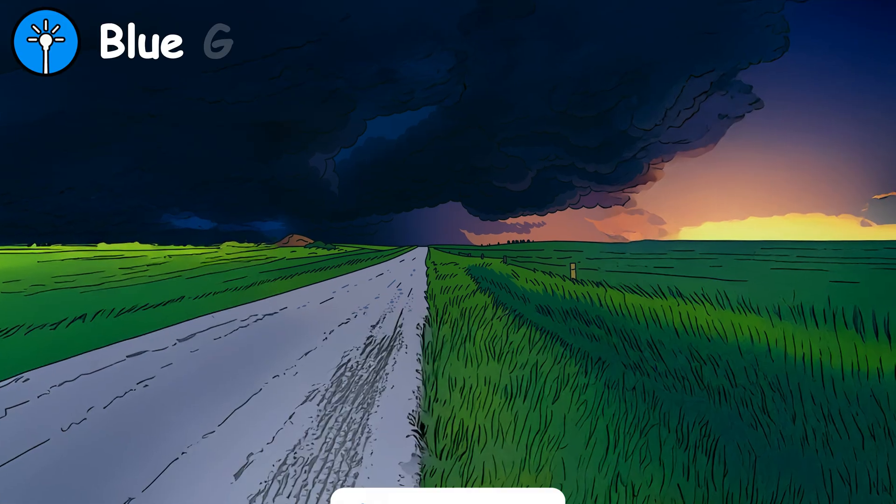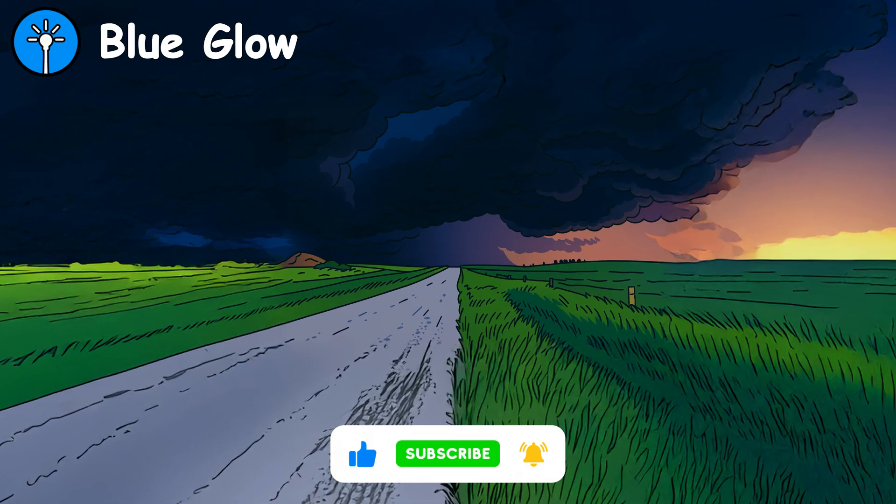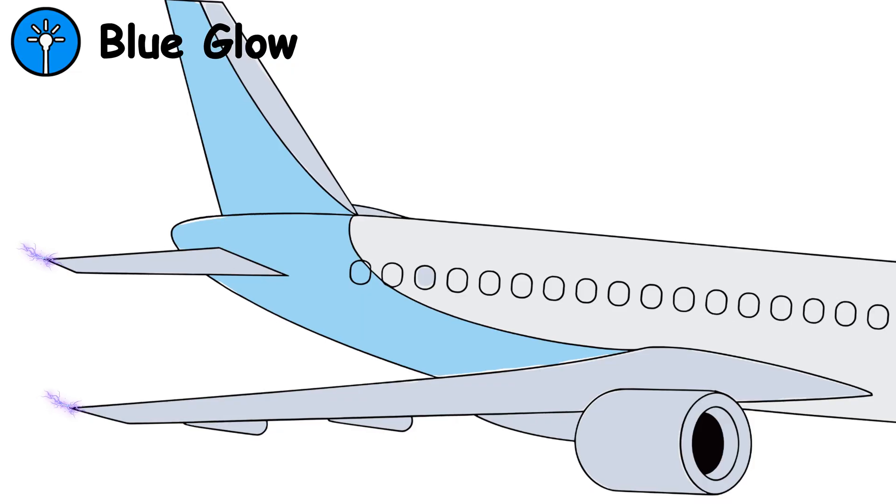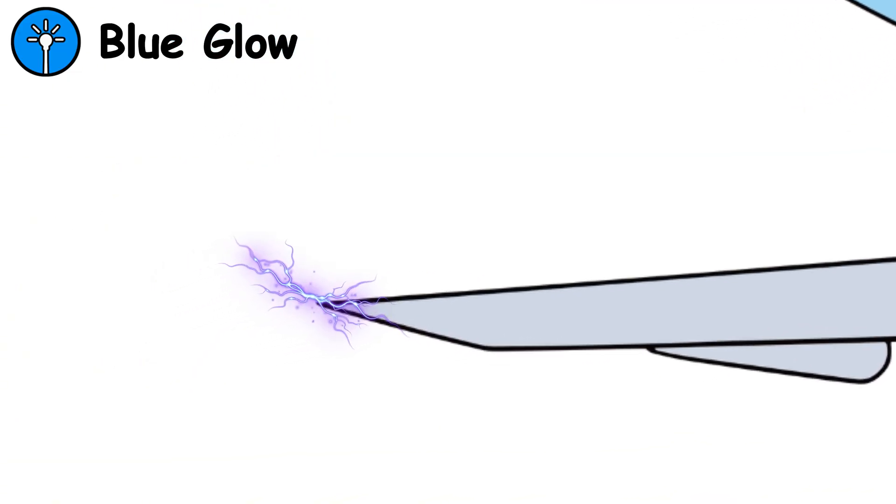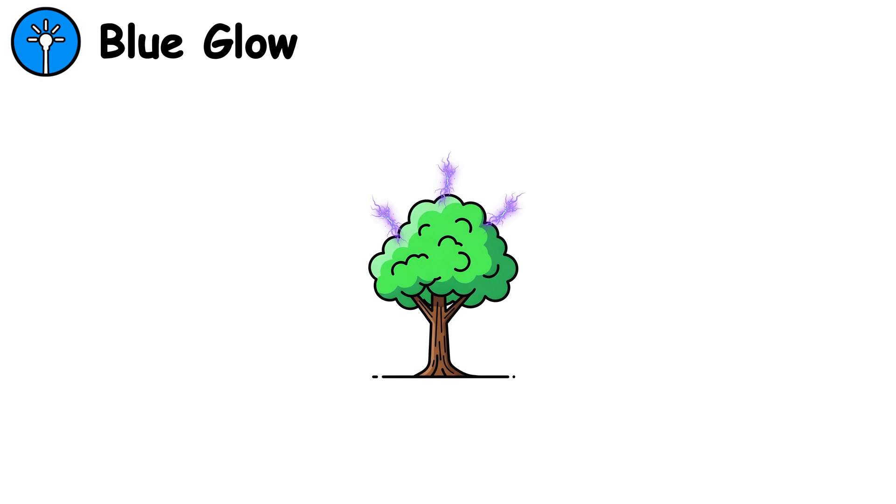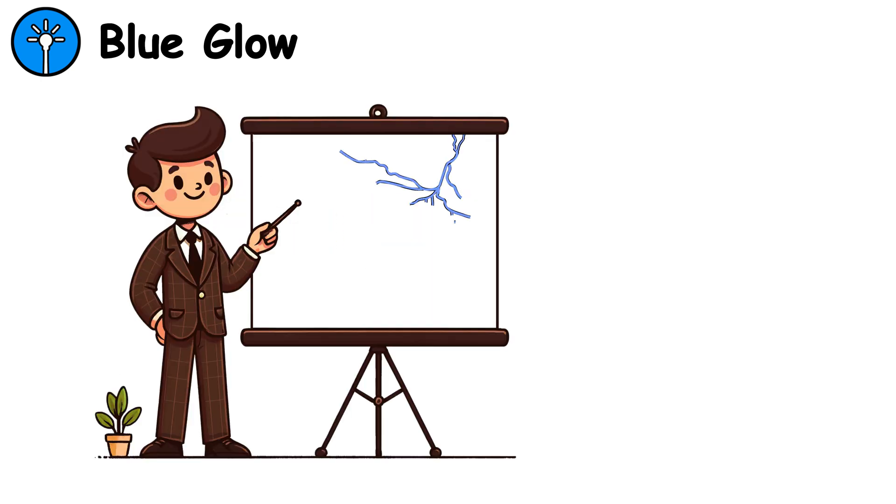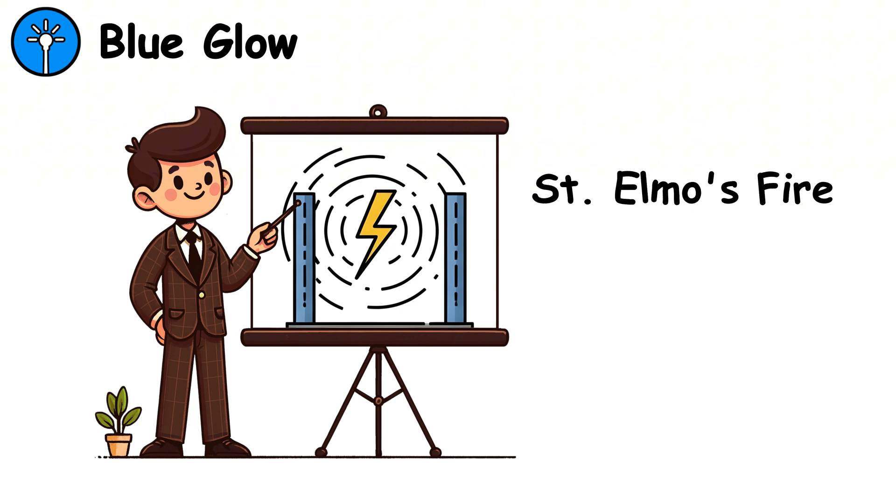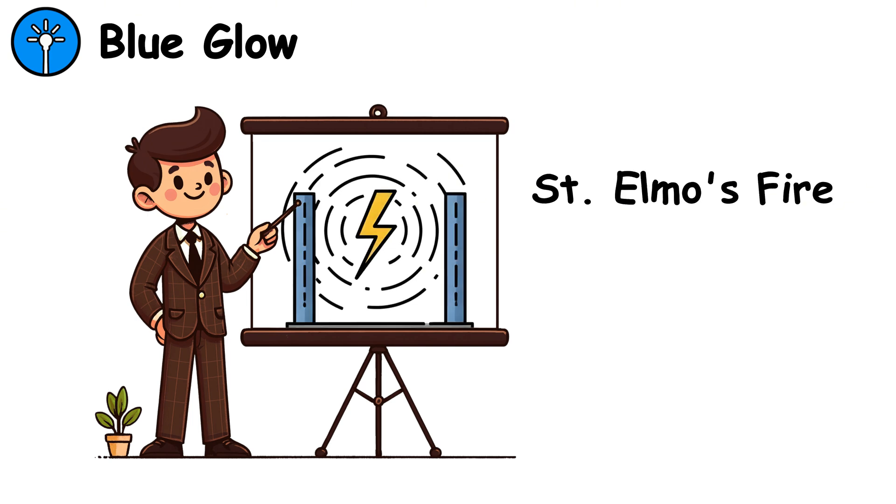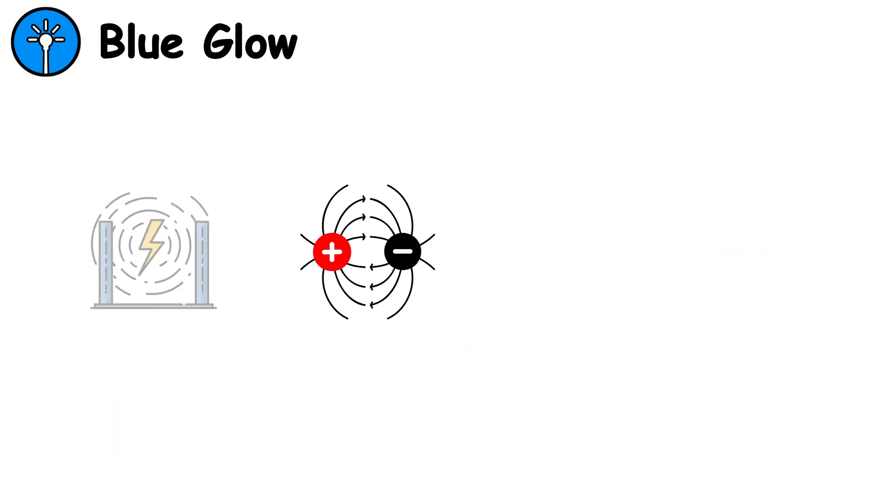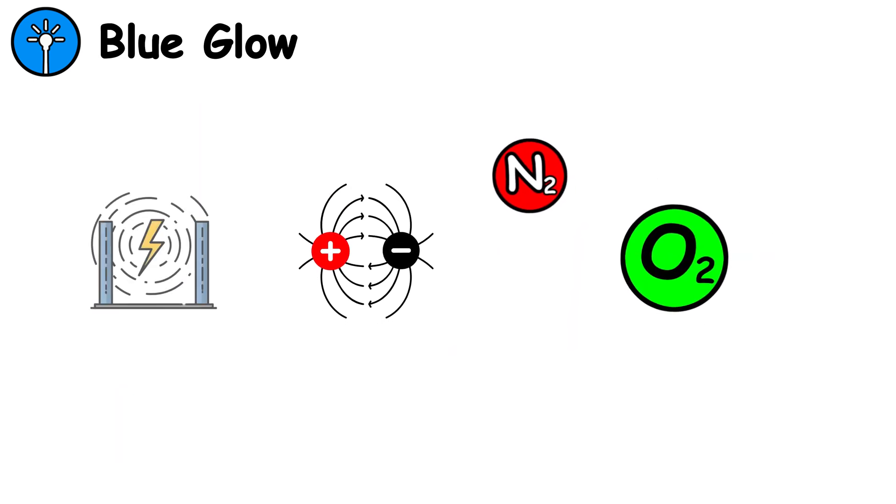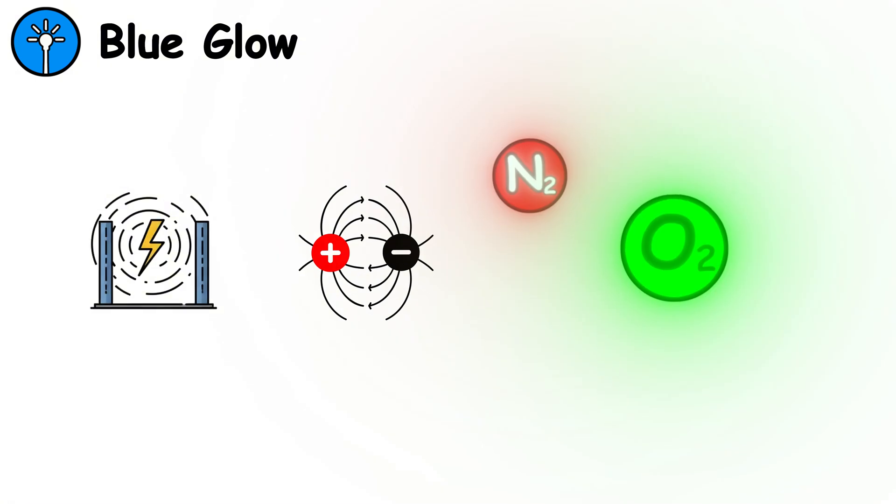Blue glow. Sometimes, lightning also gives a visible warning just before it strikes. You might see a faint blue or purple glow on metal objects, tree tips, or poles. This phenomenon is called St. Elmo's Fire. It occurs when the electric field becomes so strong that it starts to ionize around sharp points and edges. The process excites nitrogen and oxygen molecules, causing them to emit light similar to what happens inside a neon sign.